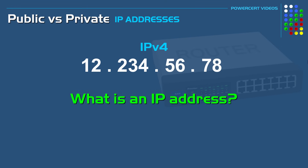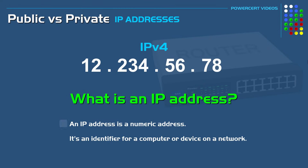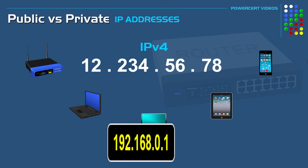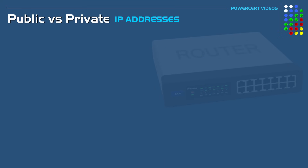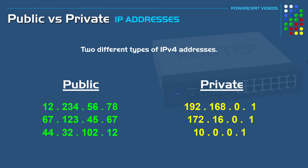An IP address is a numeric address. It's an identifier for a computer or device on a network. Every device has to have an IP address for communication purposes. And there are two different types of IP addresses: public and private.